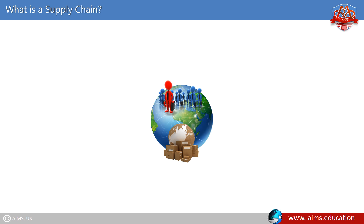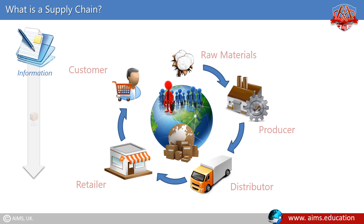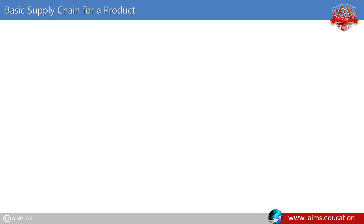What is a supply chain? A supply chain is a global network used to deliver products and services from raw materials to end customers through an engineered flow of information, physical distribution, and cash.